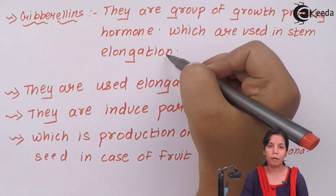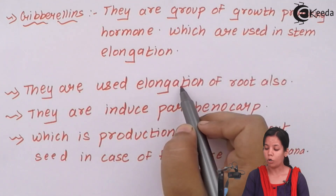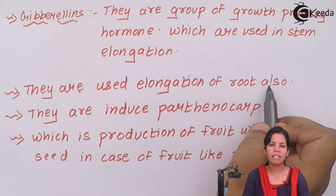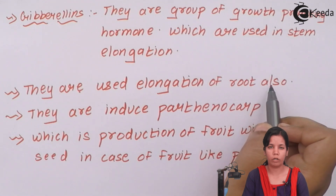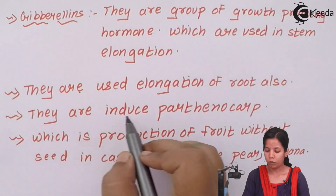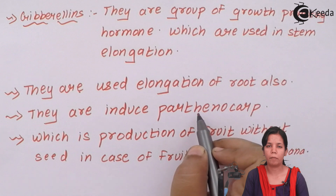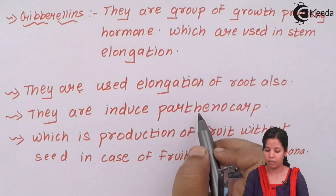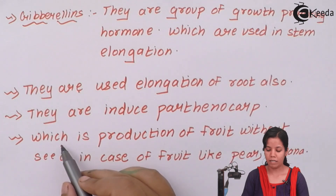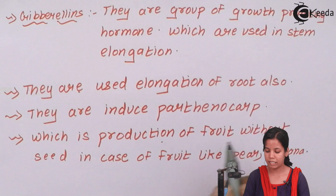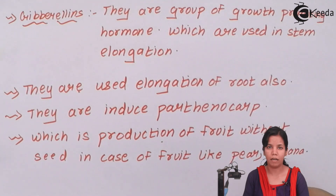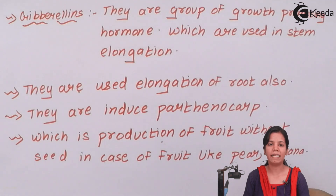Gibberellins are also used in elongation of fruits, and help in both shoot and root elongation. They induce parthenocarpy — when we use gibberellins, they help us to induce parthenocarpy in fruits, meaning fruits without seeds. Gibberellins help in the production of seedless fruits such as pear and banana. Parthenocarpic fruits are widely produced with the help of gibberellins.